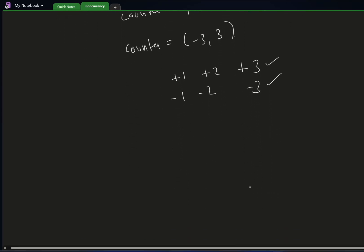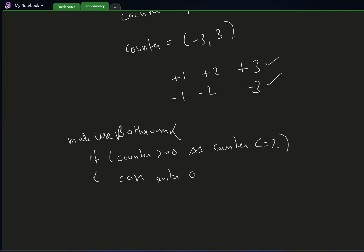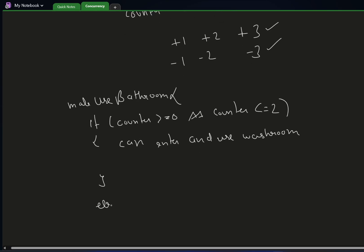Now let's see how these functions will look. For male_use_bathroom, in rough code: if the counter is greater than or equal to zero AND counter is less than or equal to two, a male can enter and use the washroom. But if this condition does not satisfy, the thread needs to sleep.